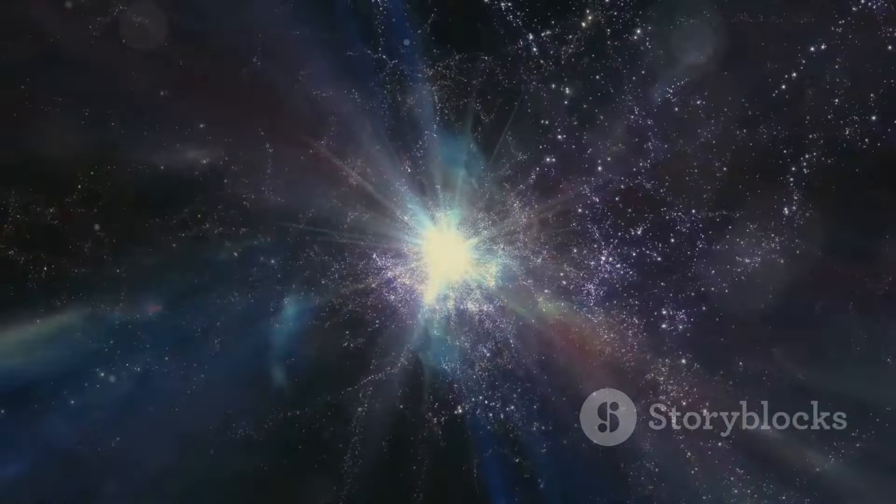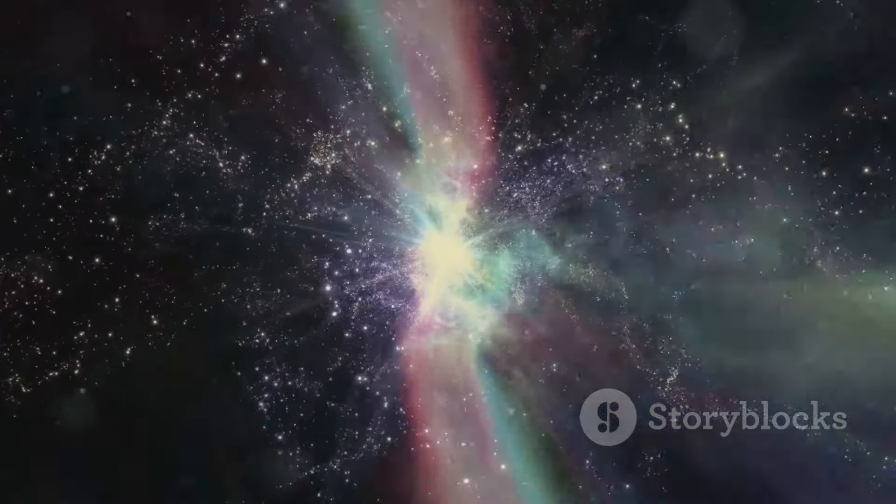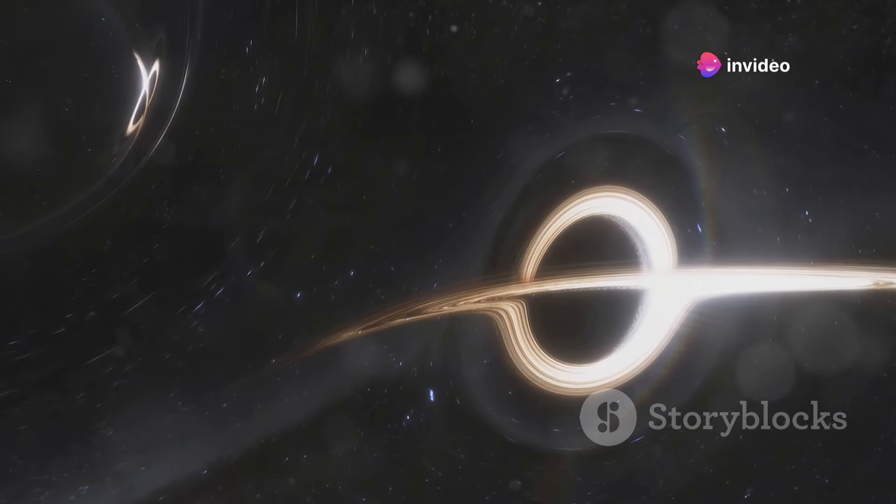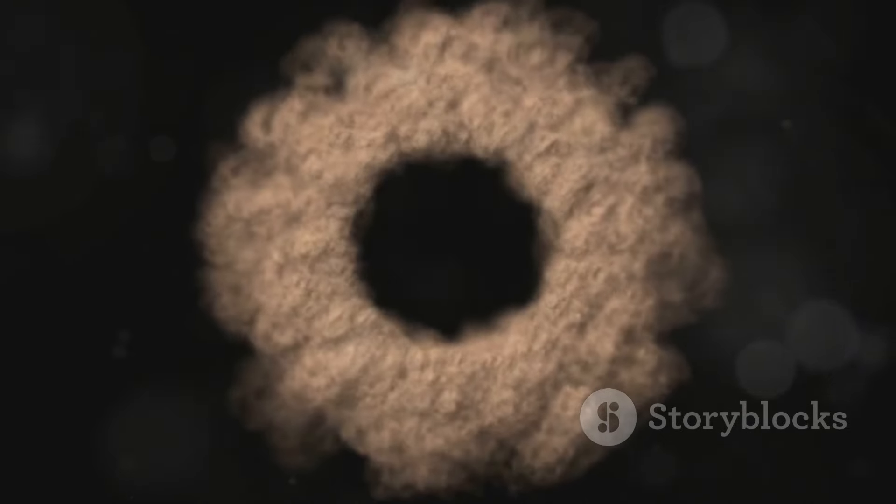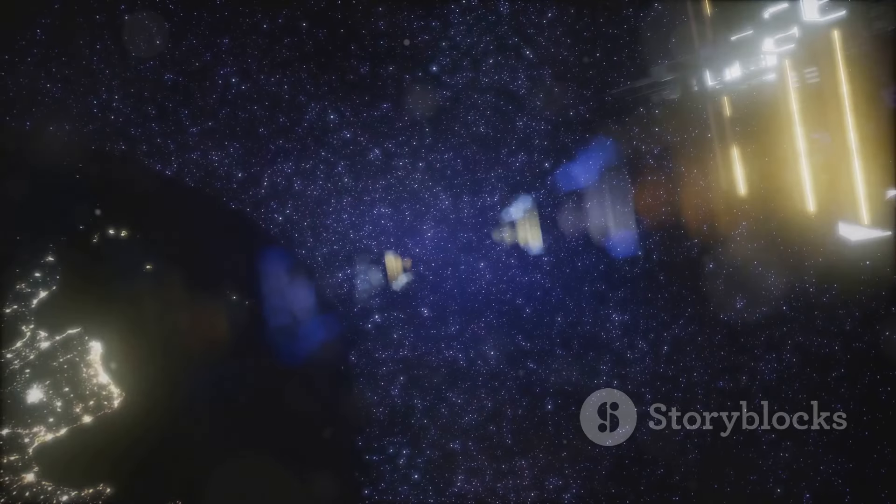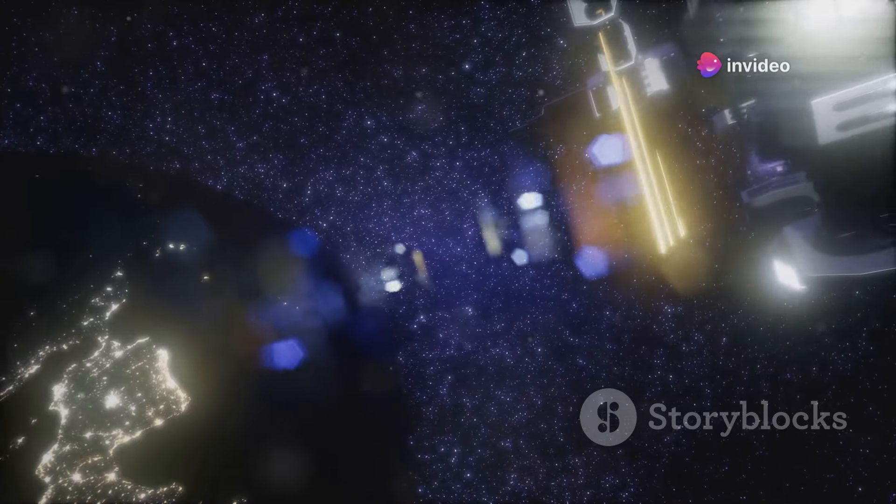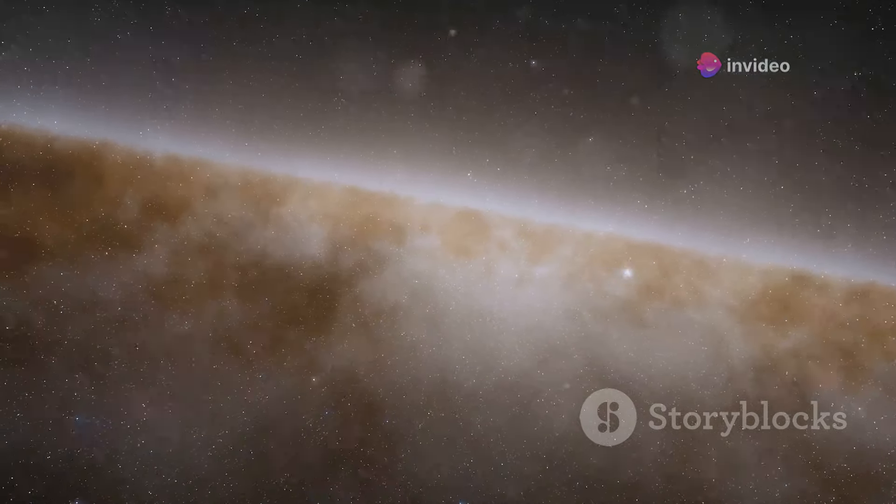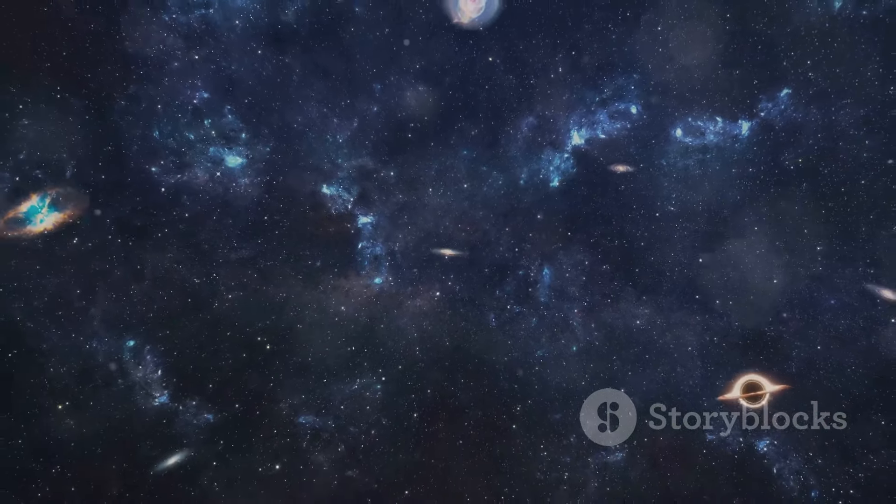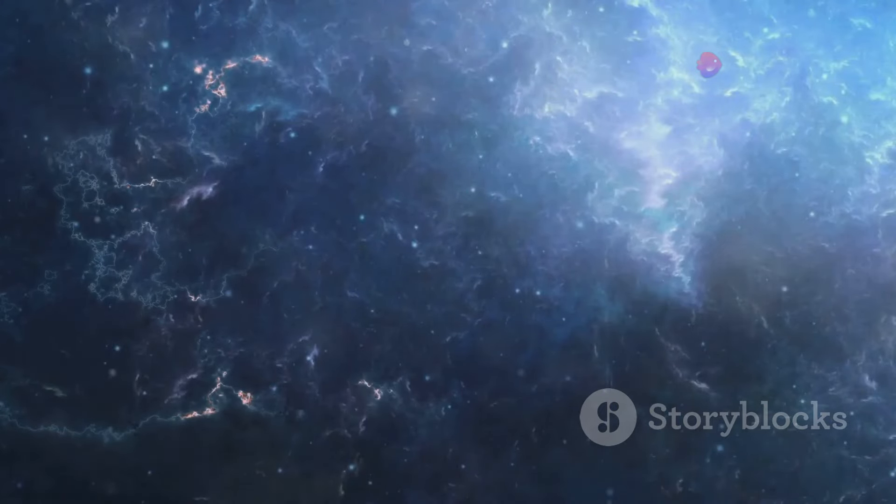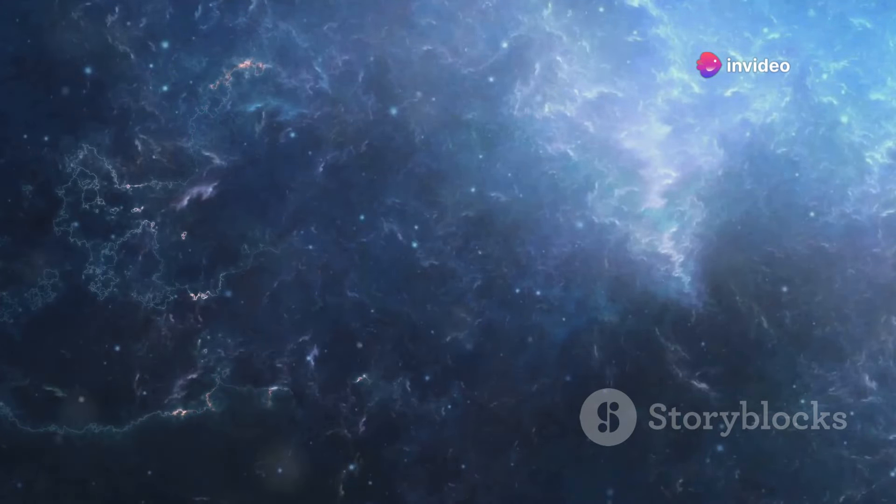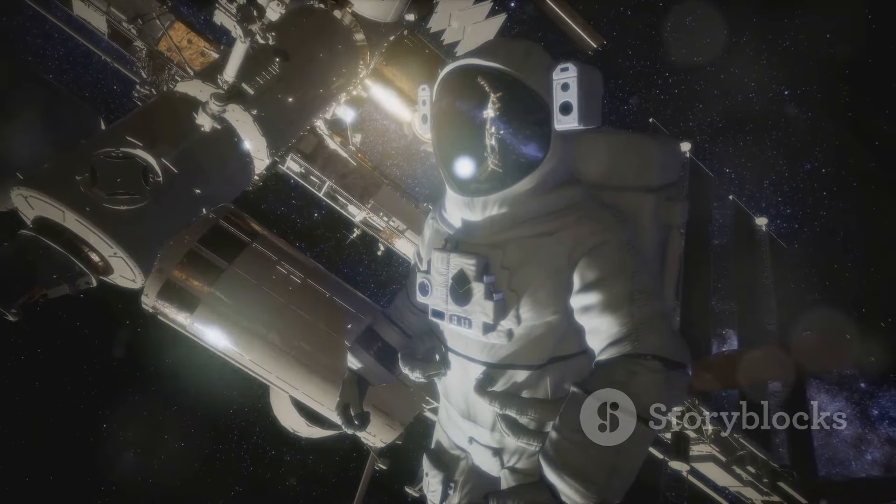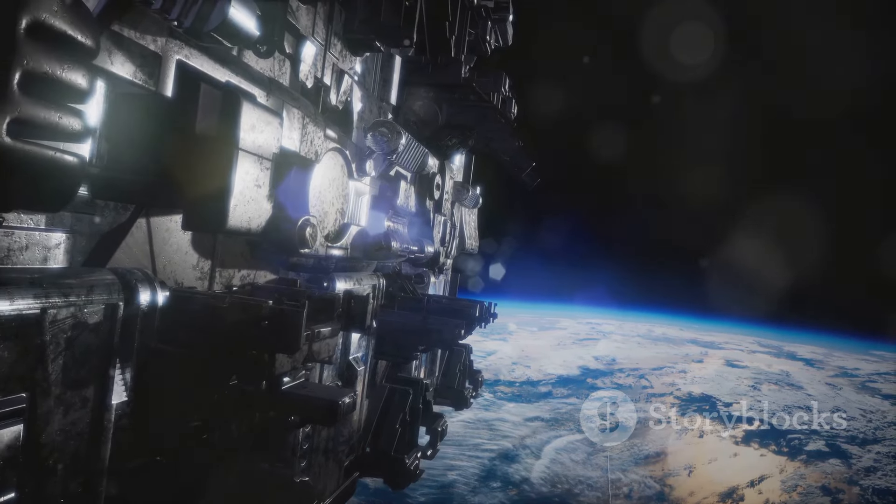We've journeyed to the end of the universe and back, exploring three mind-blowing ways it could all end. The Big Rip, where dark energy tears everything apart. The Big Crunch, where gravity pulls everything back together. And Vacuum Decay, where a bubble of true vacuum obliterates everything in its path. Each of these scenarios offers a unique and awe-inspiring perspective on the vastness and power of the cosmos. Which of these do you think is the most likely way the universe will end? While we don't have a definitive answer yet, the quest to understand our universe's ultimate fate is a journey of discovery in itself. If you enjoyed this cosmic adventure, be sure to like this video, share it with your fellow space enthusiasts, and subscribe to our channel for more mind-expanding explorations of the universe.